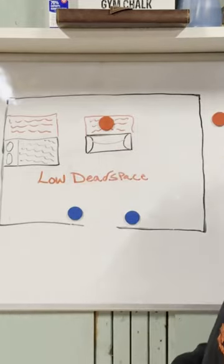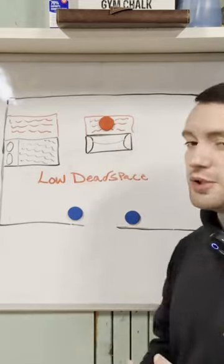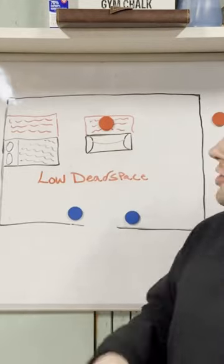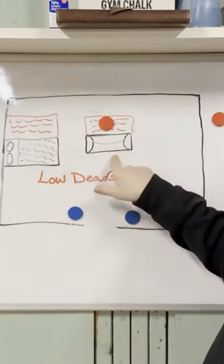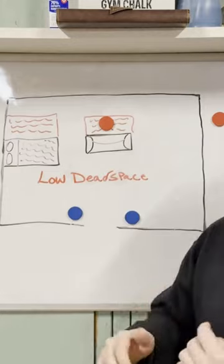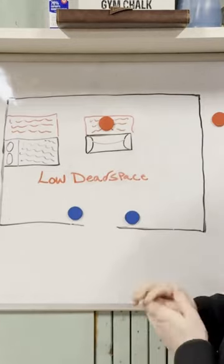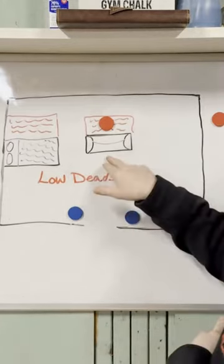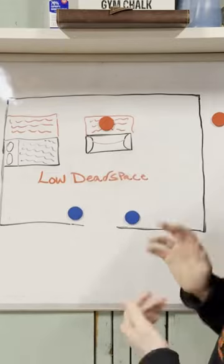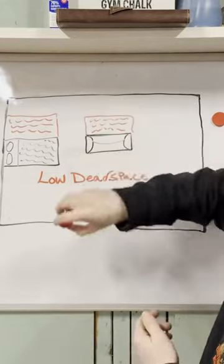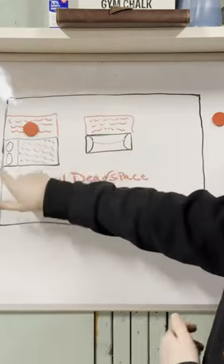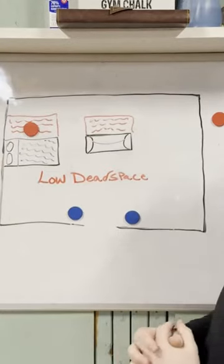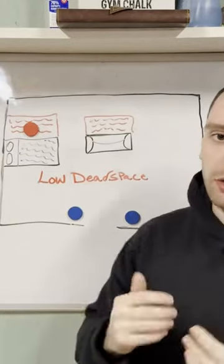Same thing with a bed. Now, low dead space can either be anchored or unanchored. So for example, we have this couch here — don't get too jealous of my artistic ability here — but this would be an example of unanchored low dead space. And we have a bed here that is up against a wall, and that would be an example of anchored low dead space.